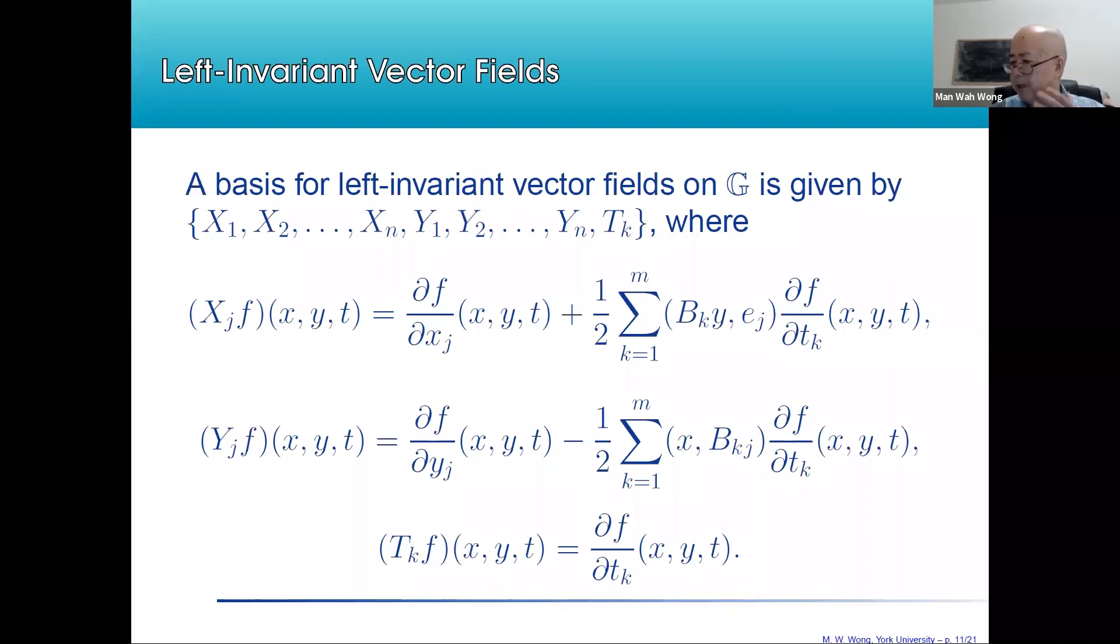There is a very simple relationship between this new Weyl transform with the classical one. Namely, the new one is just the old one with symbol sigma lambda, with sigma lambda given by the ordinary symbol sigma at B lambda X and C.